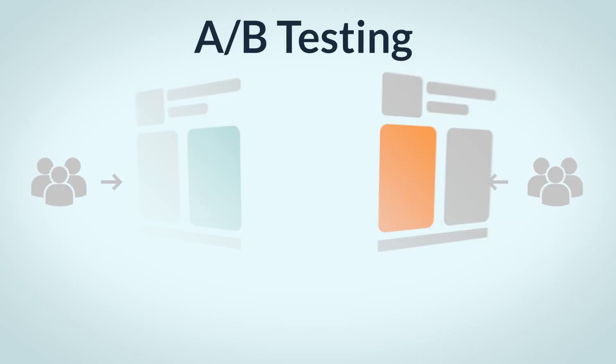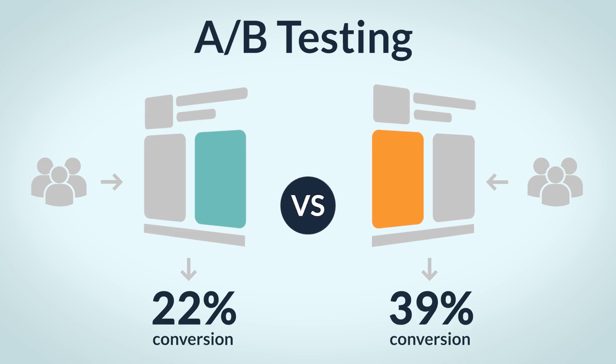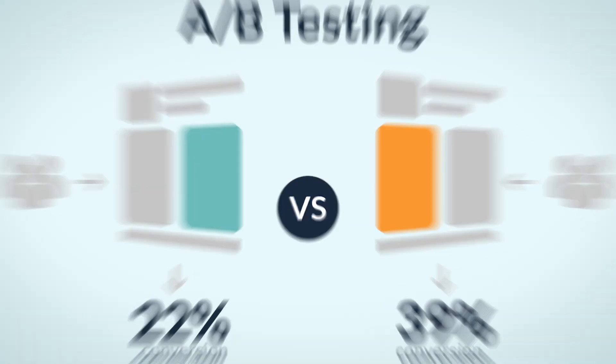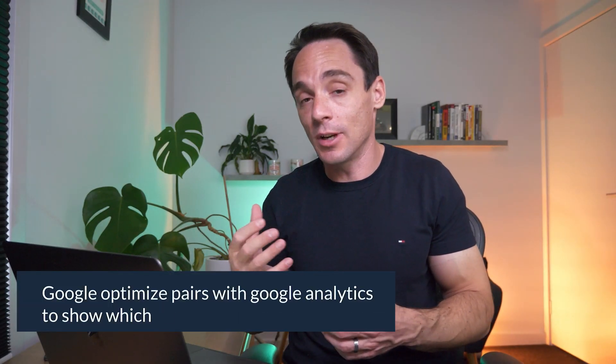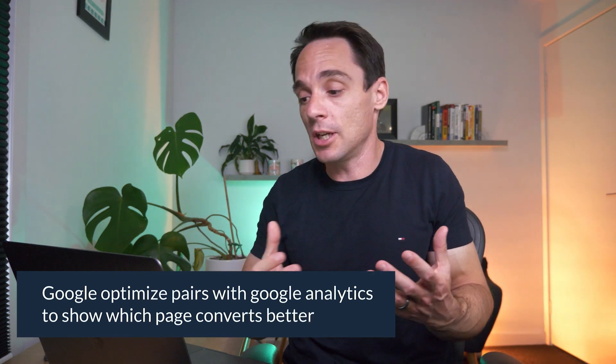Next up, we've got another completely free tool, and this one works hand in hand with Microsoft Clarity. It's called Google Optimize. What it allows you to do is set up an A/B test or a split test between any page you like. So once you use Microsoft Clarity to figure out what you need to focus on improving, you can make those changes in a new page and split test the original and the new page. Google Optimize pairs with Google Analytics to show you which page converts better. Once you have the results, you can implement that page live on your website and start your next test.